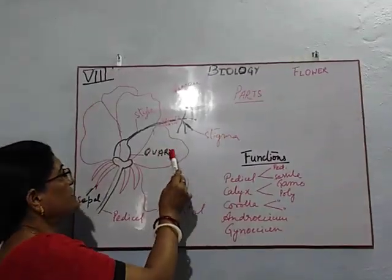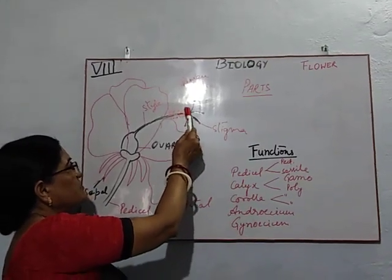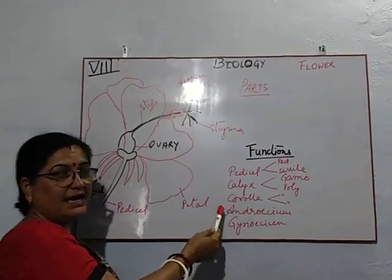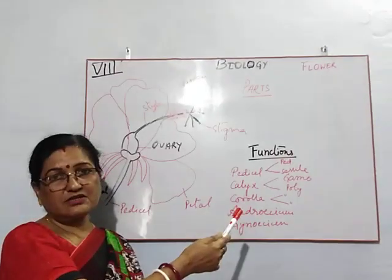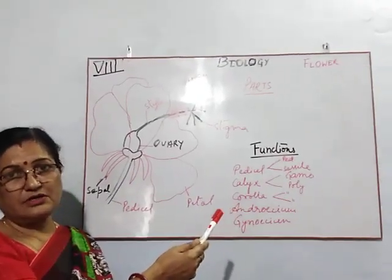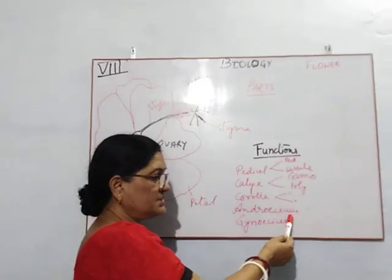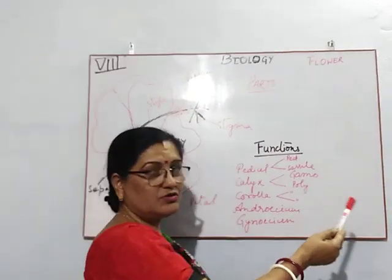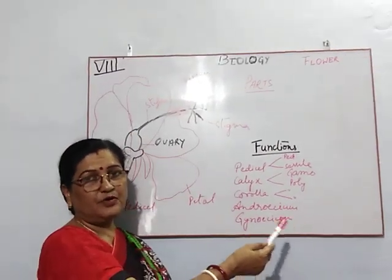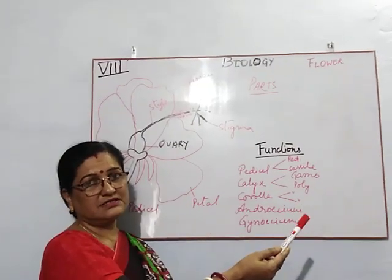So in the lobular structure — these are dotted structures, you can see here — they have some male gametes which are called pollen grains. During fertilization, these pollen grains will go to another flower and pollinate it.